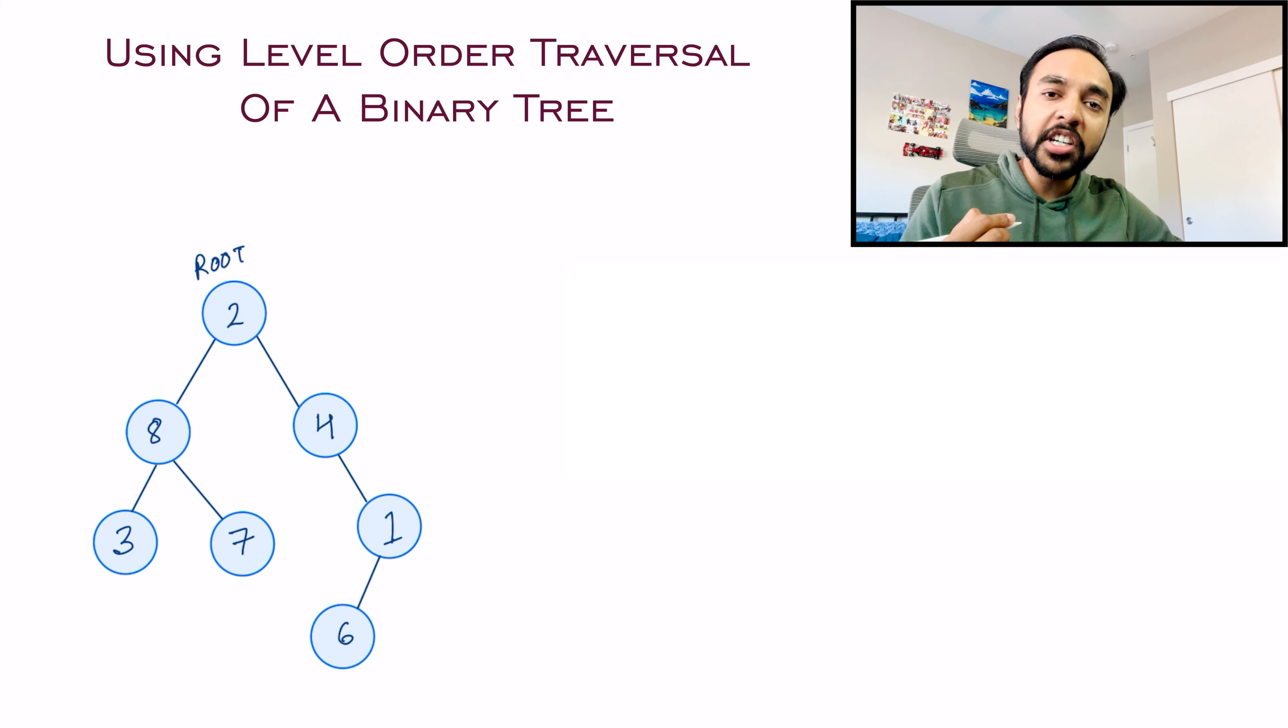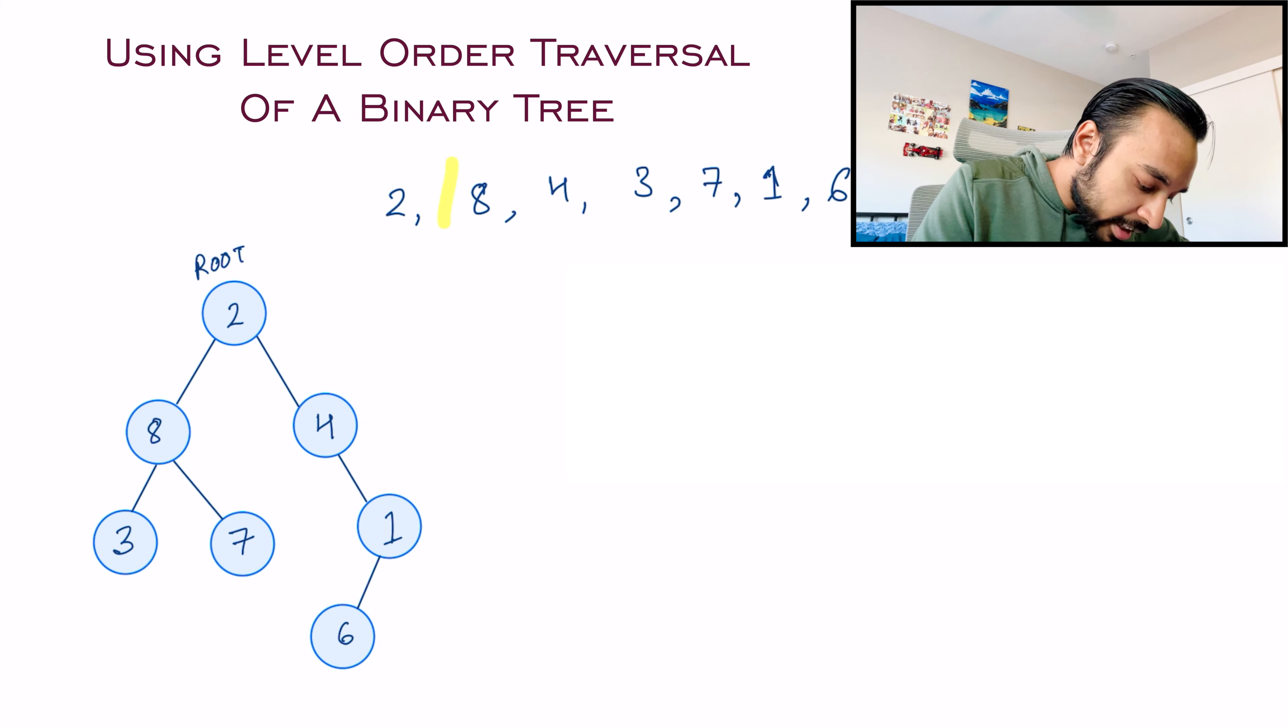A level order traversal will simply mean that you first get two, then eight, then four, then three. But how do you know that after two, the level ends, after four, the level ends, and after one, the level ends? So in this problem, we will be only focusing on that part.